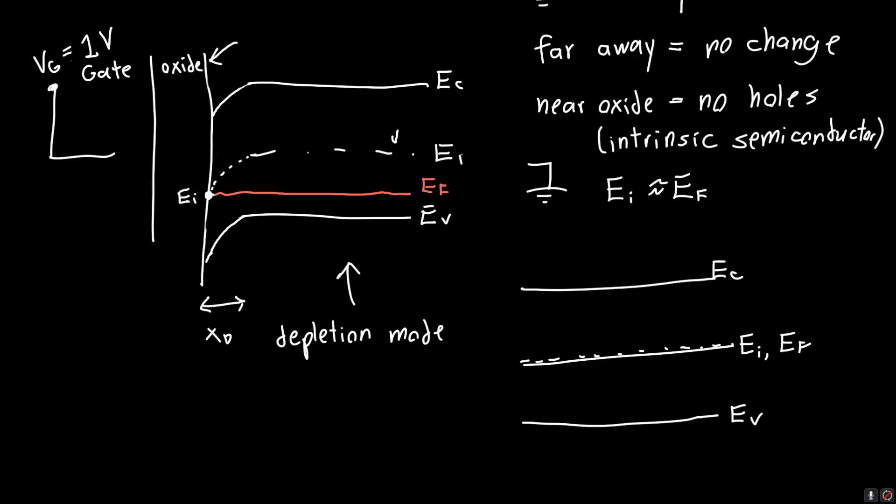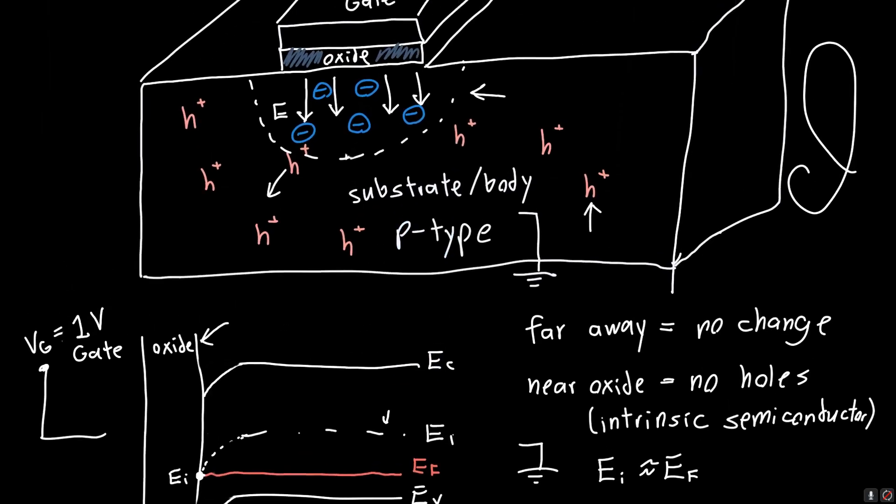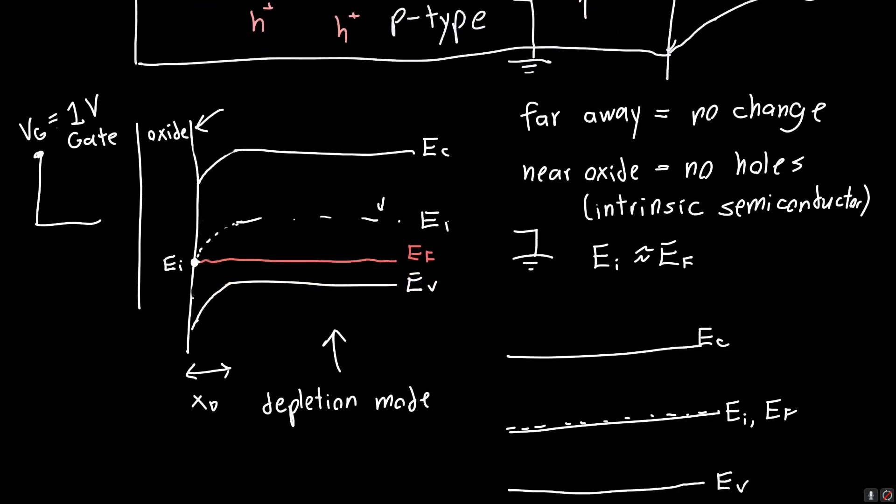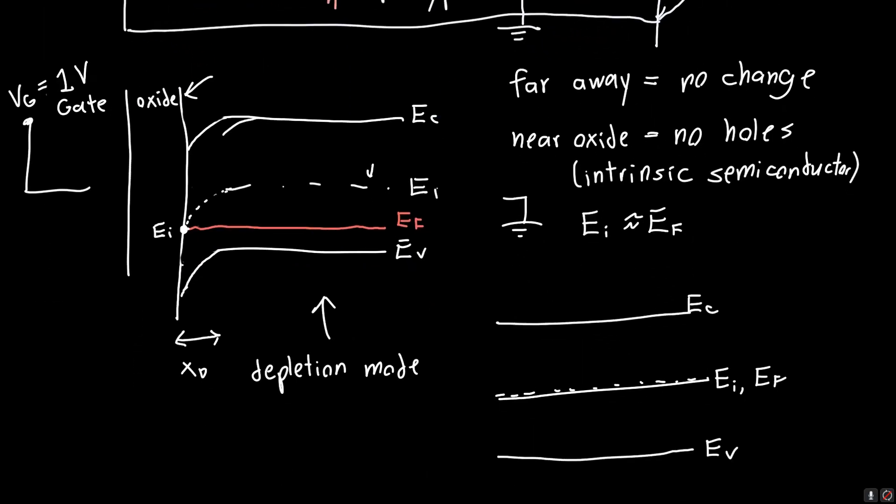Well, we'd expect this conduction band, we'd expect all these bands to continue bending, right? Because that was the trend when we applied an increasing voltage. So we'd expect them to bend even more than they did before. And if we're being really precise, we'd also expect the depletion region to grow, right? So we know that the depletion region width is dependent on the square root of the reverse bias voltage that we applied to it. So we'd expect this depletion region to grow, to get larger. And so this is seen by the bands starting to bend earlier.